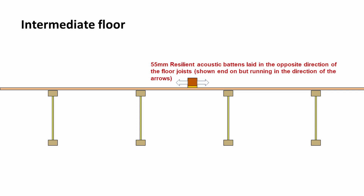Above that, we would have resilient acoustic battens, 55mm. These are the sort of battens with a foam bottom to them, and they run in the opposite direction from the joists on top of the plasterboard. As shown in cross-section, they run perpendicular to the joists and are supported on all the joists as they go across the room.